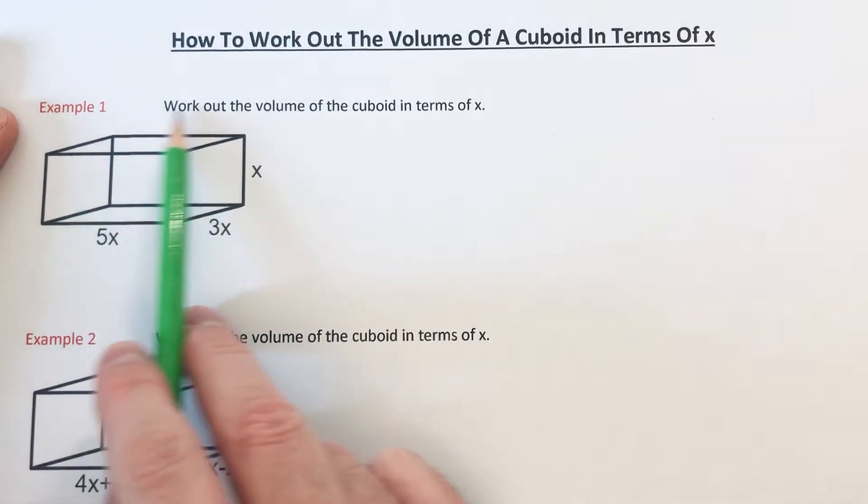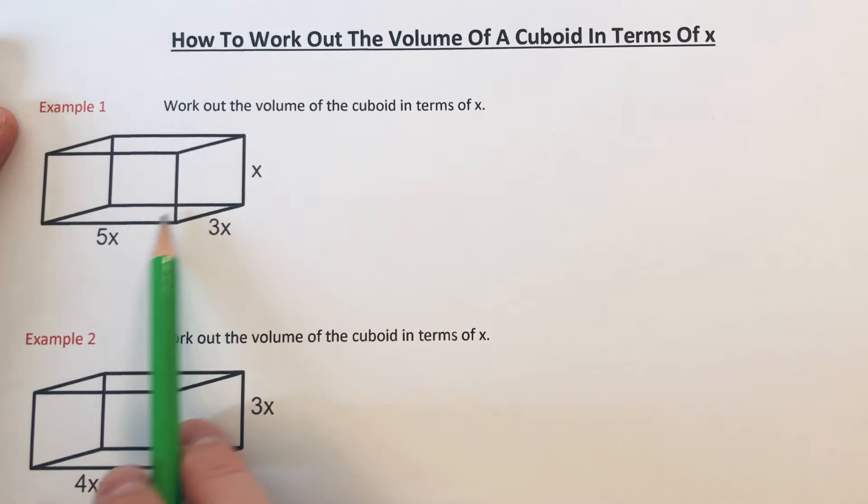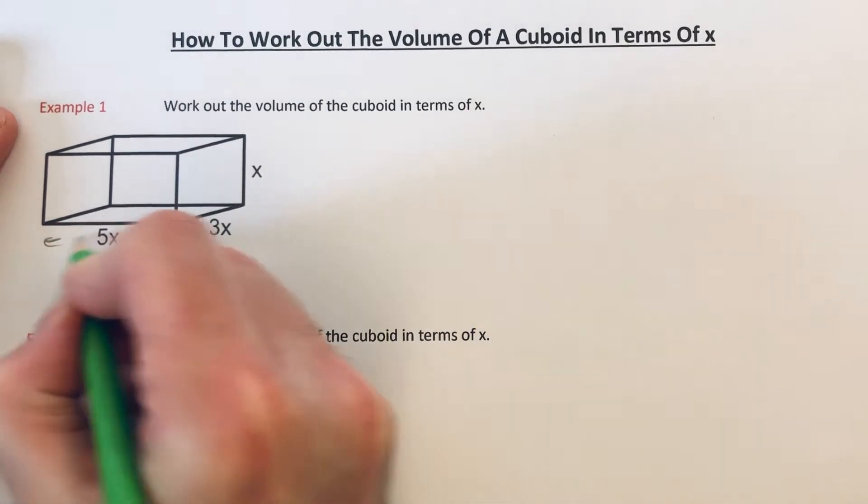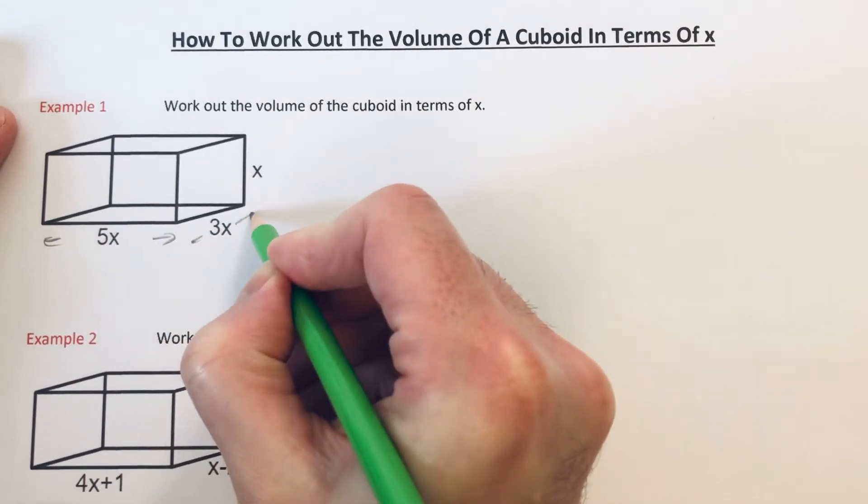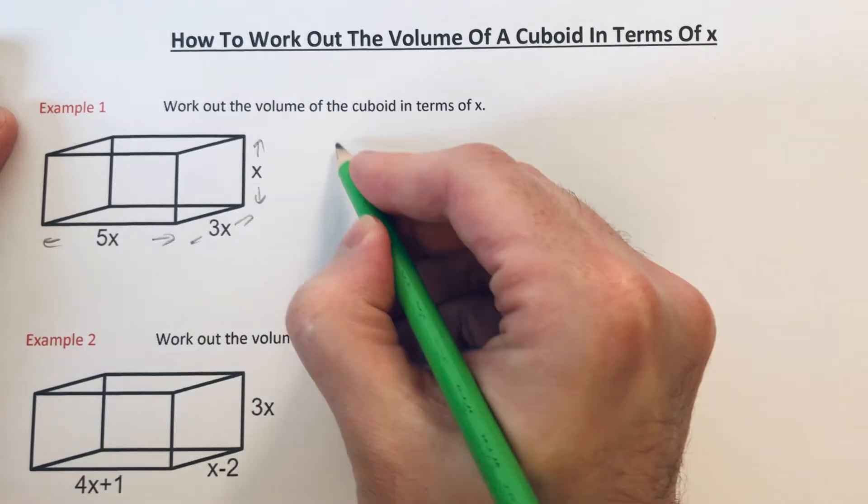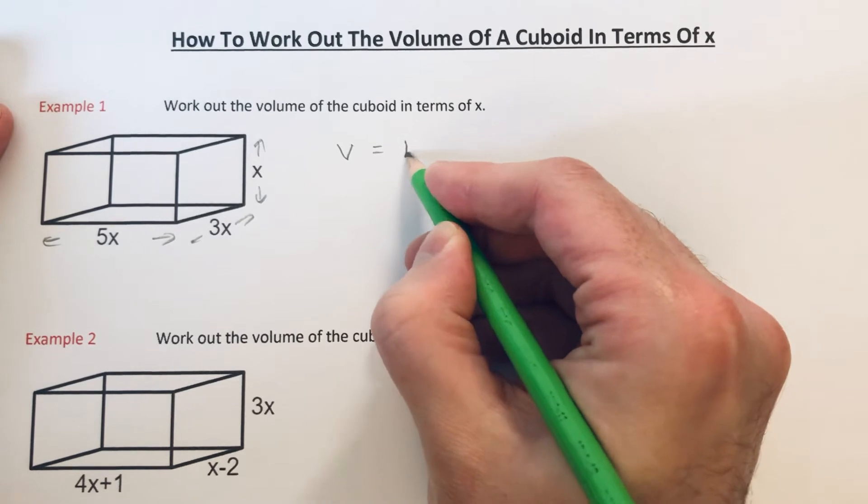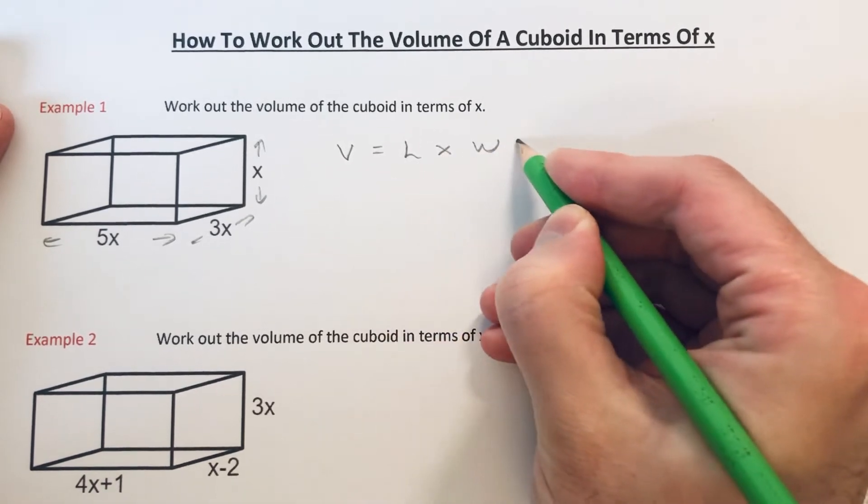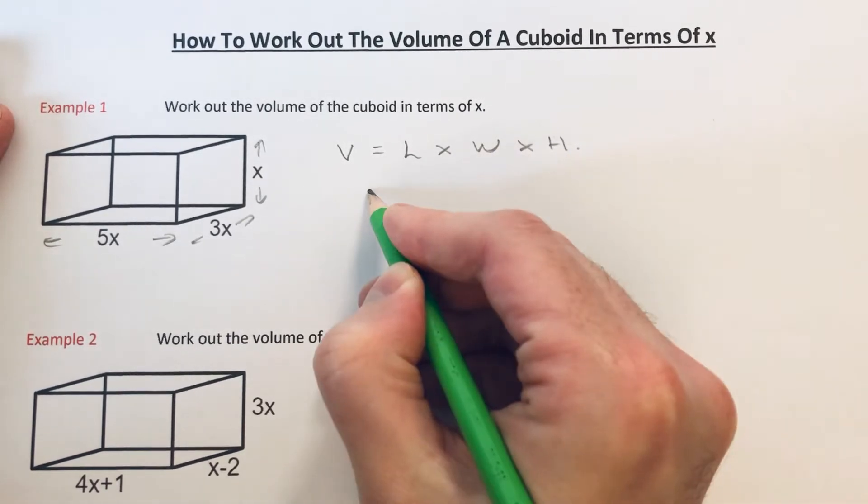Our first example is work out the volume of the cuboid in terms of x. The length of the box is 5x, the width is 3x, and the height is x. To work out the volume of a cuboid, you multiply the length of the box by the width of the box by the height of the box.